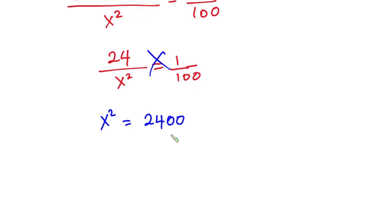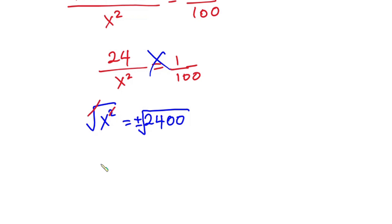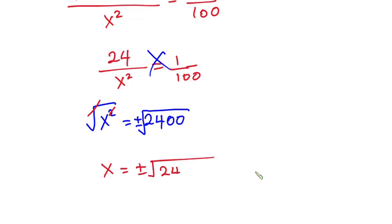Now since we're looking for x, let's go ahead and take the square root on both sides. And don't forget we have plus or minus here. This squared will cancel the square root, so we have x is equal to plus or minus square root of 2400.